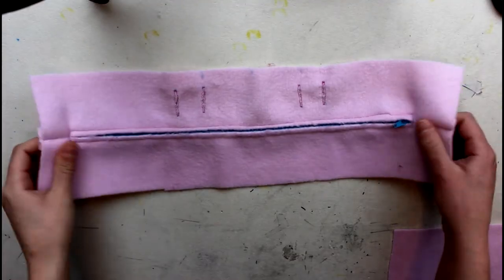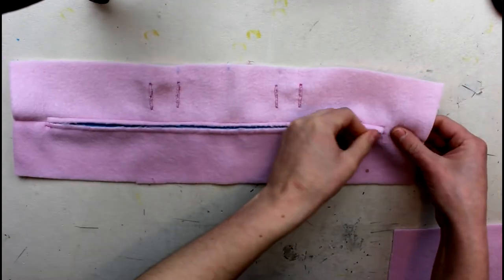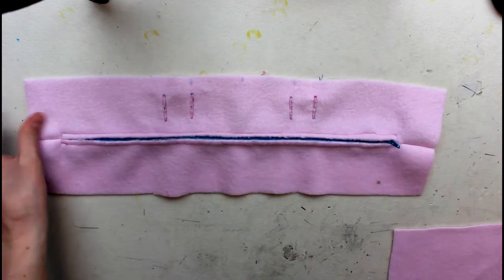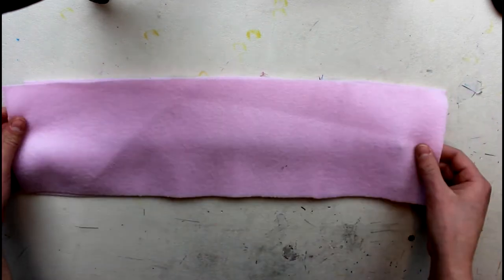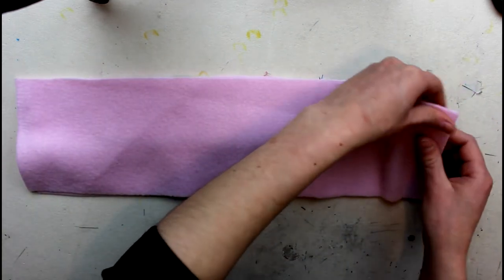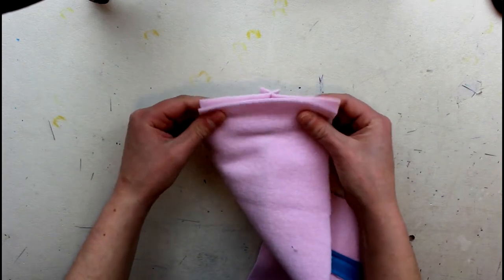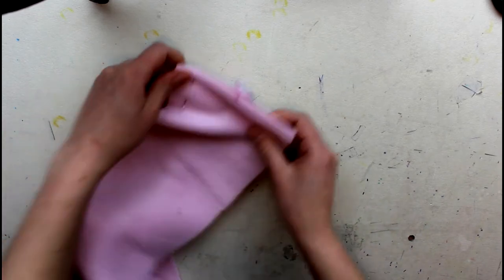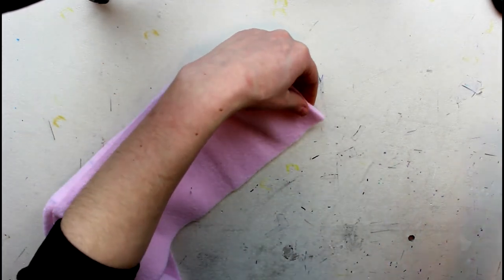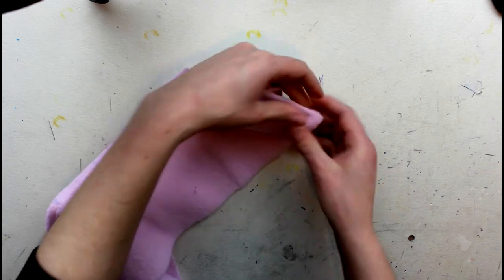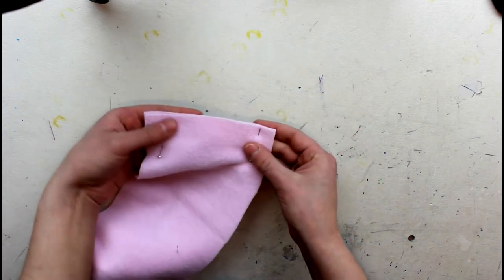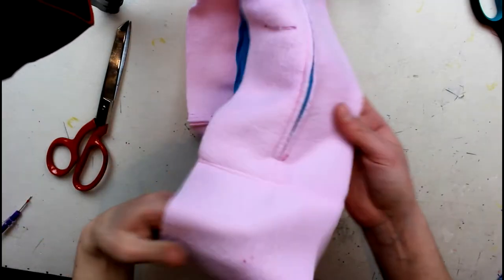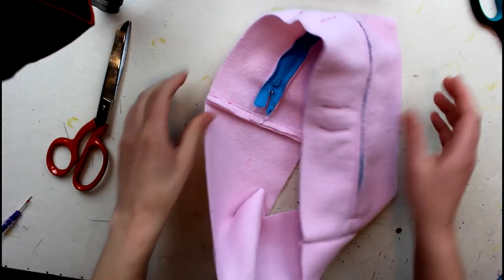Now that your zipper is in, we can assemble the bag. Take your yoke piece or your bottom piece and put them right sides together and connect them at the short edges. Someone was asking me what a yoke is. Basically it's just a piece of fabric that will make your project a bit bigger, a bit larger. It's mainly used in bag making.